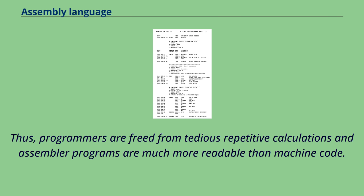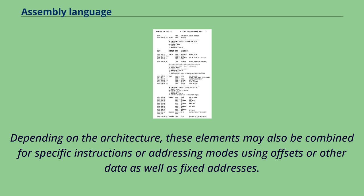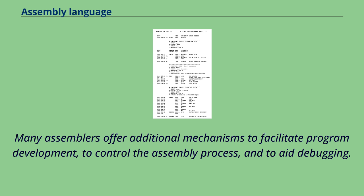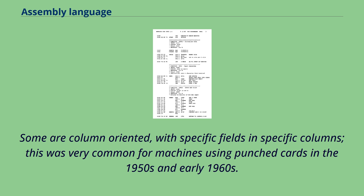Thus programmers are freed from tedious repetitive calculations and assembler programs are much more readable than machine code. Depending on the architecture, these elements may also be combined for specific instructions or addressing modes using offsets or other data as well as fixed addresses. Many assemblers offer additional mechanisms to facilitate program development, to control the assembly process, and to aid debugging.